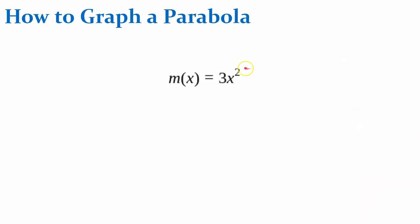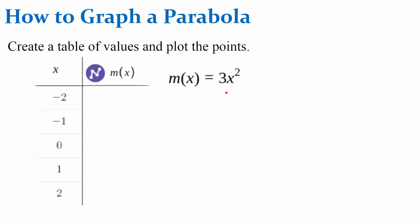How to graph a parabola? We have the function m, 3x squared. We're first going to create a table of values and plot the points. So I picked the five inputs here, negative 2, negative 1, 0, 1, and 2. You plug those in for x and evaluate for the output.